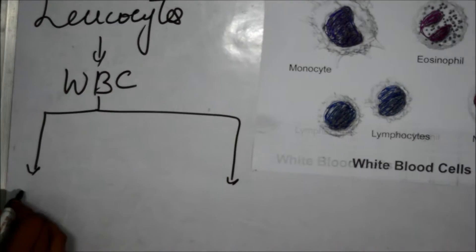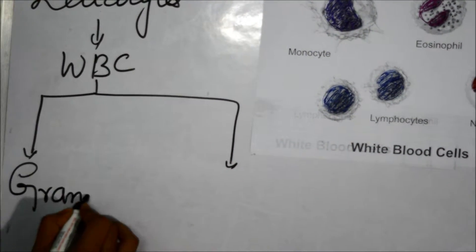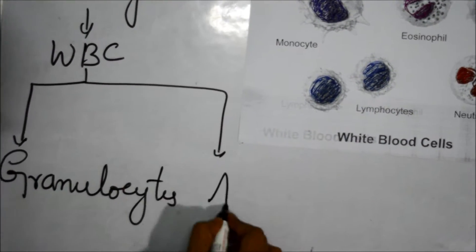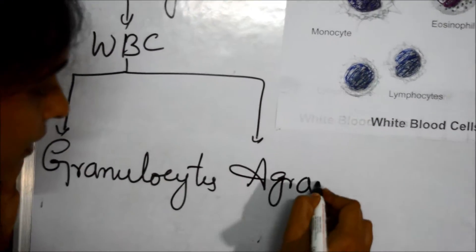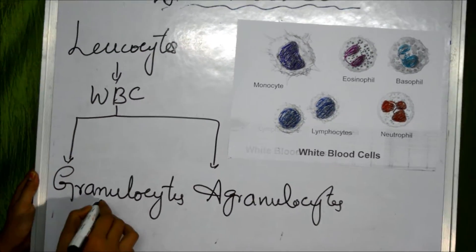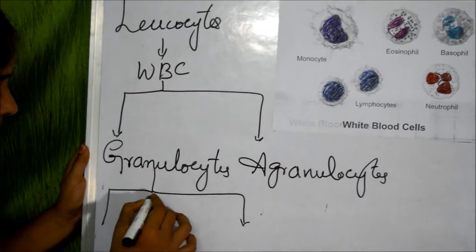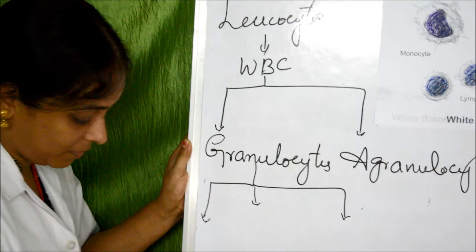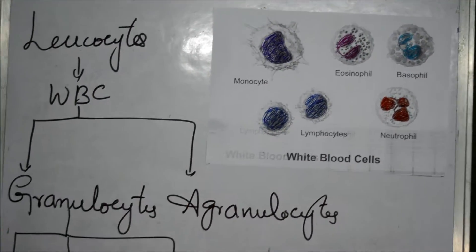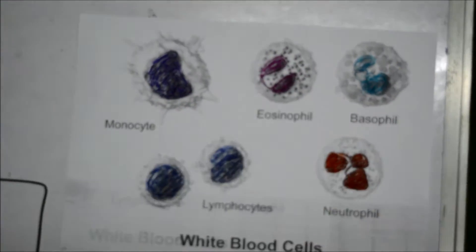White blood cells are divided into two types: granulocytes and agranulocytes. These two types are again divided into subtypes. Granulocytes are divided into monocytes, eosinophils, and basophils.